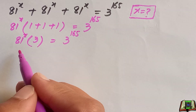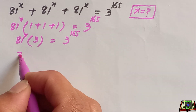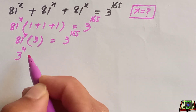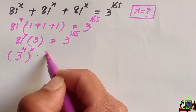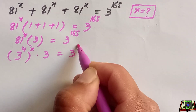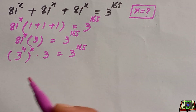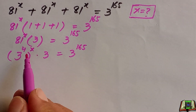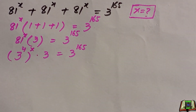Since multiplying 3 four times gives us 81, we can write 81 as 3 raised to the power 4. So the expression becomes 3 raised to the power 4, whole power x, times 3, equals 3 raised to the power 165.